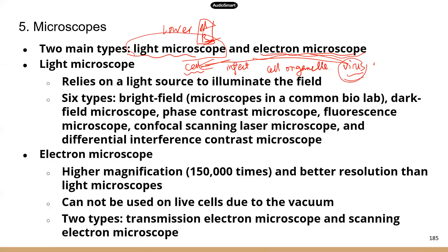ATI can probably ask two types of questions about microscopes. They could give a general statement — if we want to achieve the greatest magnification and resolution, would you use a light microscope or an electron microscope? Or they can give specific examples: if you want to study cell organelles or viruses — extremely small structures — would you use light or electron microscopes? The answer would be electron microscopes. Now, light microscopes rely on a light source to illuminate the field. There are six types of light microscopes, and I really didn't expect ATI to list all six types.